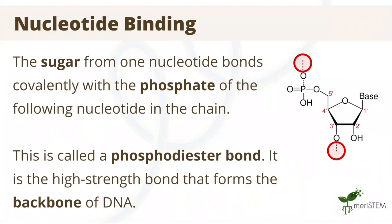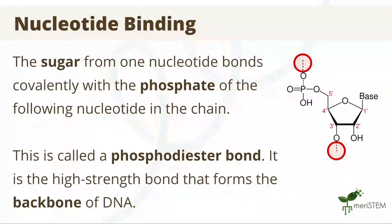You may be wondering how do all of these nucleotides bind together? The sugars from one nucleotide bond covalently with the phosphate of the following nucleotide in the chain. This is called a phosphodiester bond, and these bonds are the high-strength ones that form the backbone of DNA. Looking at the diagram shown here, nucleotides bond together with adjacent nucleotides via the spots indicated in the red circles. Note that this high covalent bond strength makes the backbone difficult to break apart.